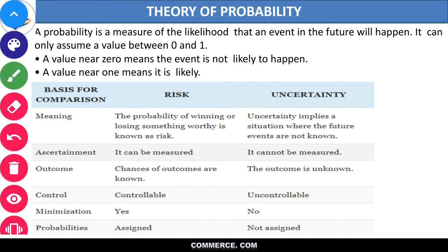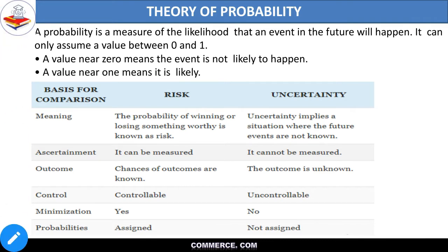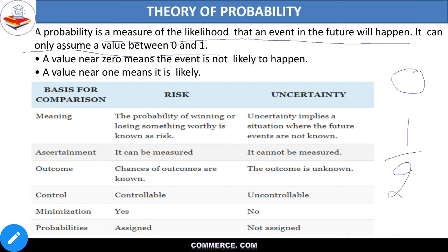A probability is a measure of likelihood that an event in future will happen — yaani ki ye measure karti hai us sambhavna ko ki jo cheez future mein ho sakti hai ya nahi. Agar voh ho sakta hai to uski probability one ya usse kuch kam, lekin agar voh nahi ho sakta to uski probability zero. Isliye probability zero se lekar one ke beech mein rehti hai. Jaise ek coin toss kiya to head ya tail aane ki probability kya hai? Head aane ki one by two — 0.5, jo zero aur one ke beech mein hai.